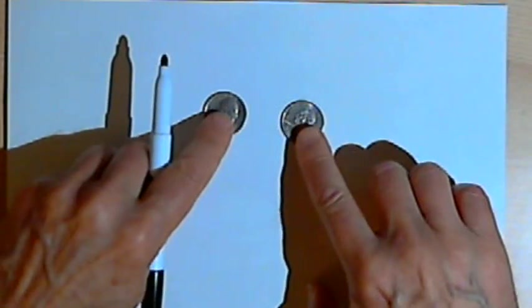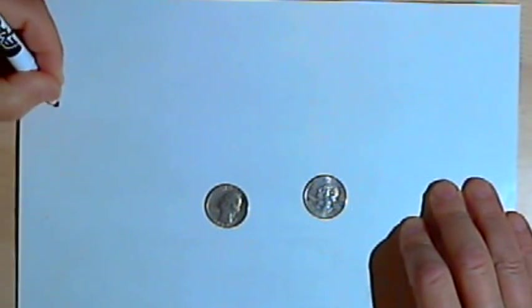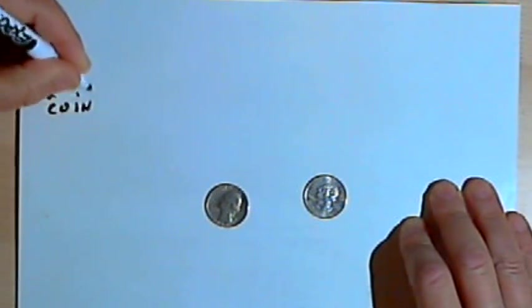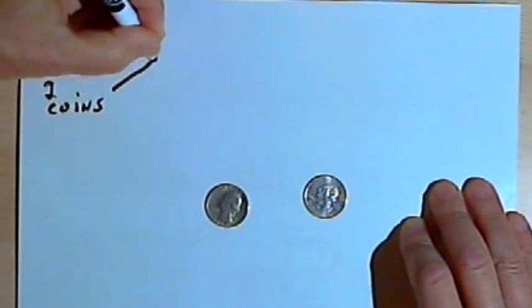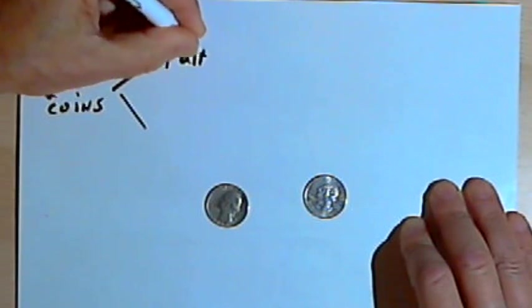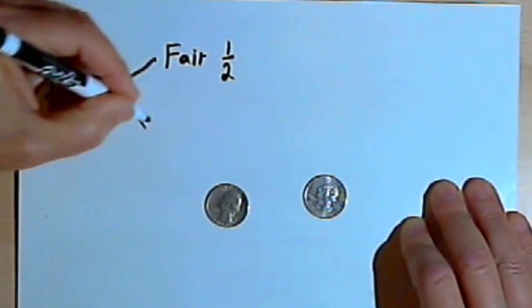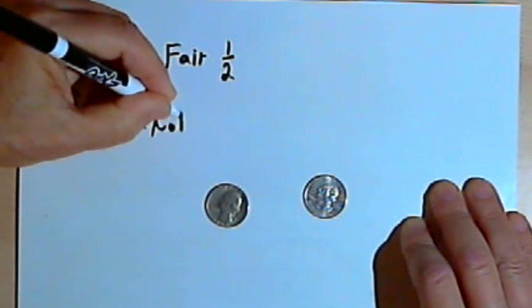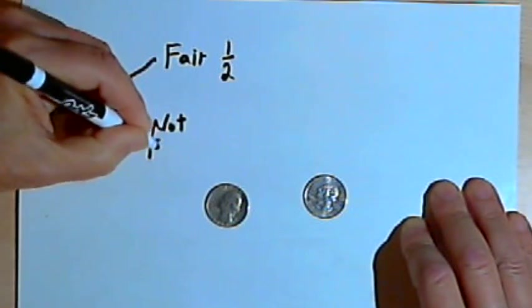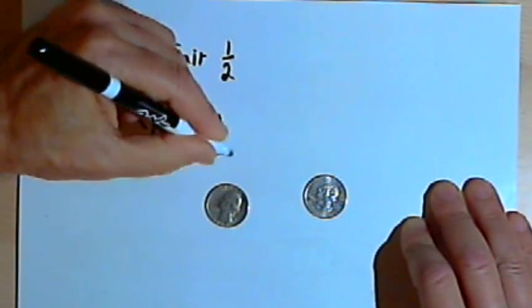Okay, so let's examine this with a tree diagram. I start out with two coins. I can either pick the fair coin, and there's a 50% probability that I've done that, or one-half probability, or I might pick the two-headed coin, the not fair coin, and there's a 50% probability that I've done that.